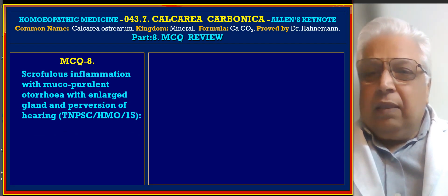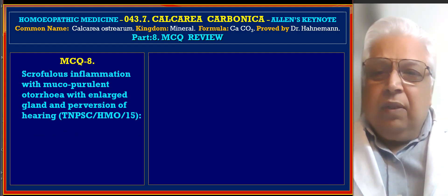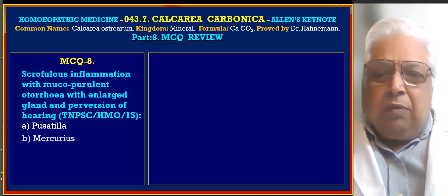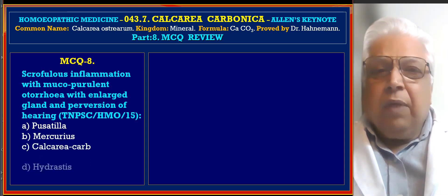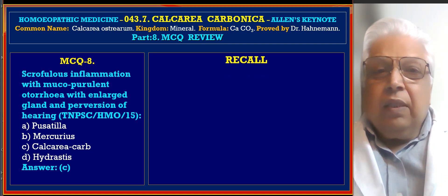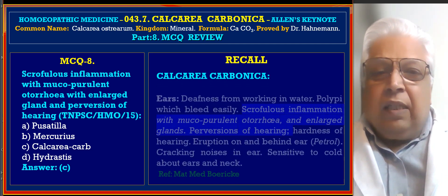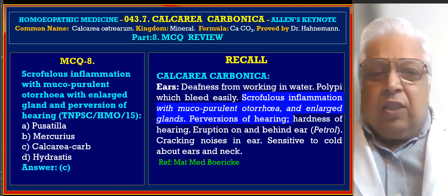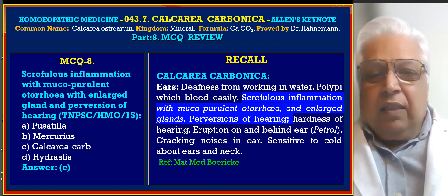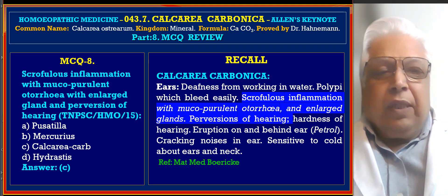MCQ 8: Scrofulous inflammation with mucopurulent otorrhoea with enlarged gland and perversion of hearing — the indicated remedy among Pulsatilla, Mercurius, Calcarea Carb, and Hydrastis. Answer is C, Calcarea Carb. Reference from Boericke's Materia Medica, ears section: scrofulous inflammation with mucopurulent otorrhoea, enlarged gland, and perversion of hearing.